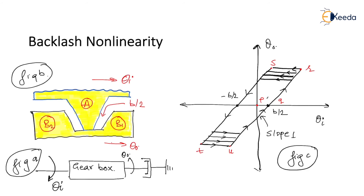Three figures show the important diagrams in backlash. Figure A shows the mechanical system, figure B shows the play between the driver gear and the driven gear, and figure C shows the output graph. Figure C gives a relation between the input and the output motion — input motion is on the x-axis and output motion is on the y-axis. Figure B shows tooth A of a driver gear.